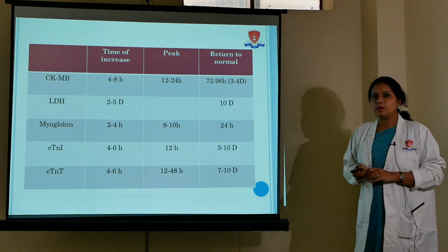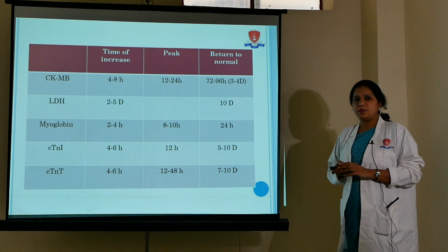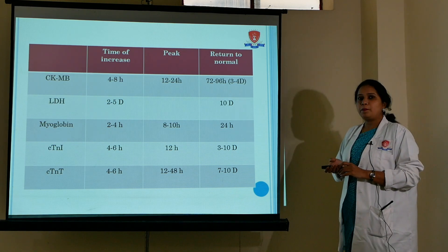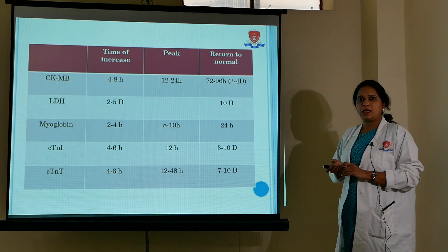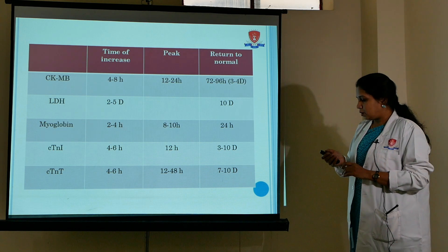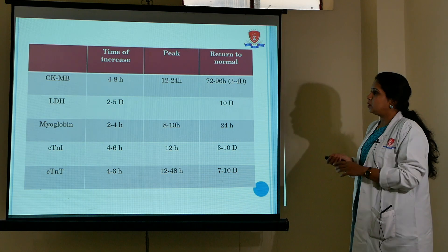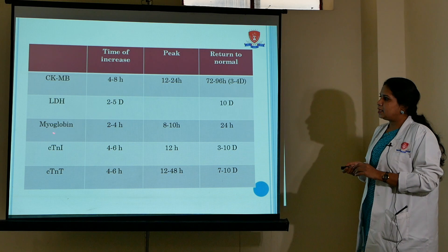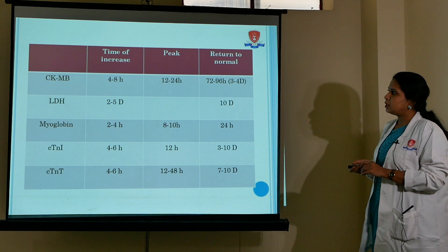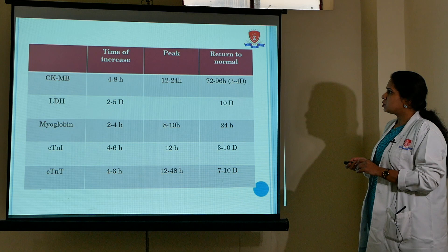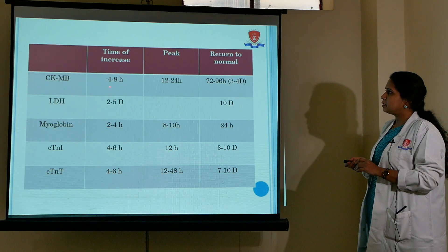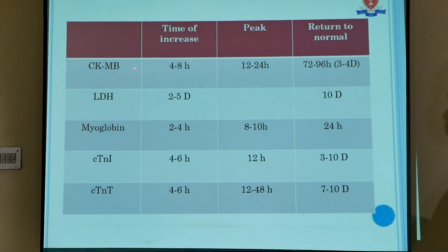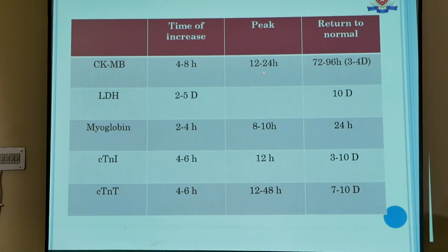Moving to the rise and fall pattern, which is important for a cardiac biomarker: in this lecture we are covering CKMB, LDH, myoglobin, troponin I, and troponin T. CKMB rises in 4 to 8 hours, reaches peak within 24 hours, and returns to normal in 72 to 96 hours. For LDH the duration is later — 2 to 5 days — and it remains elevated up to 10 days.